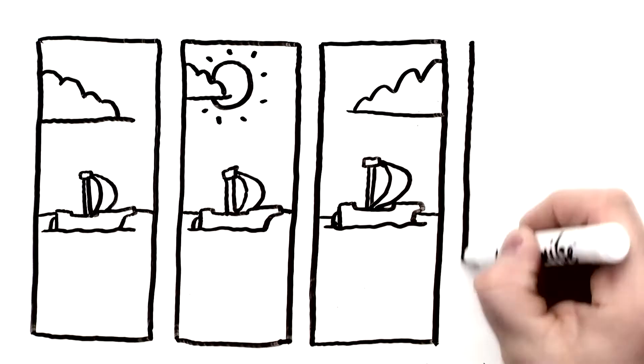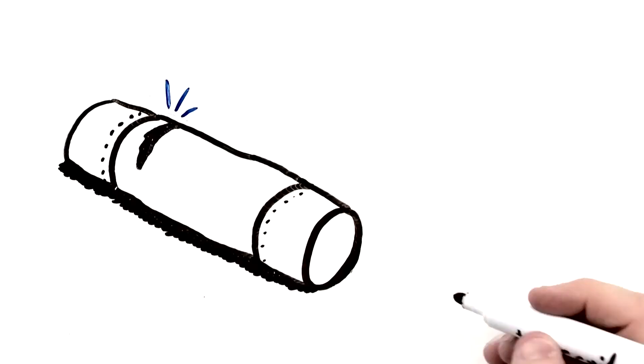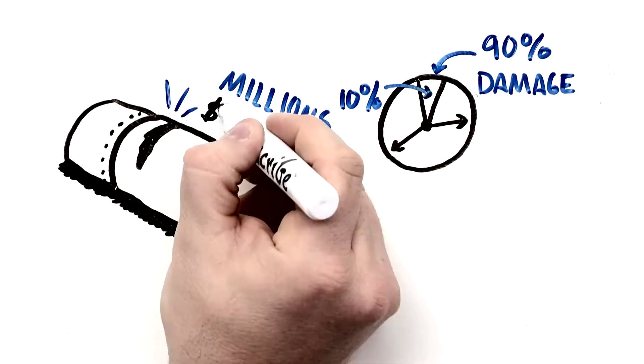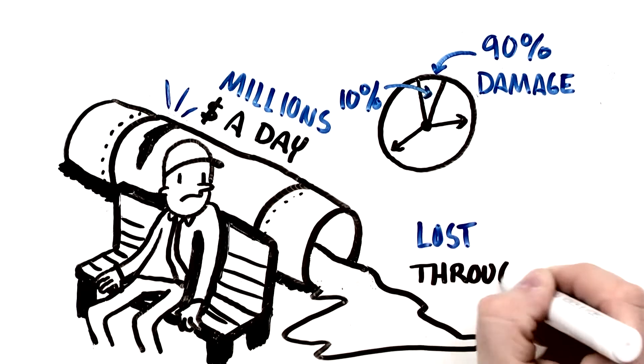Sailing in stormy seas is infrequent and so is corrosion on the crude unit. 90% of corrosion damage happens in 10% of the time and it costs millions of dollars a day in downtime and lost throughput.